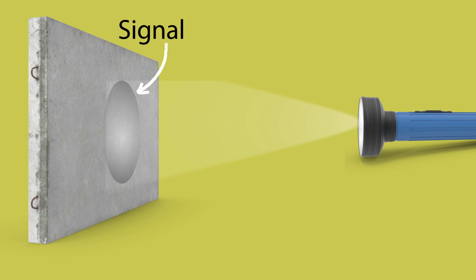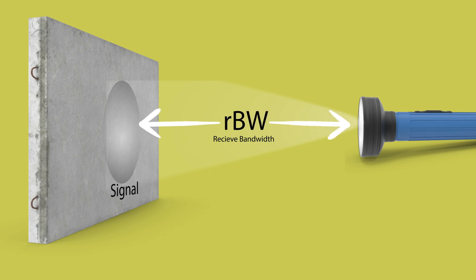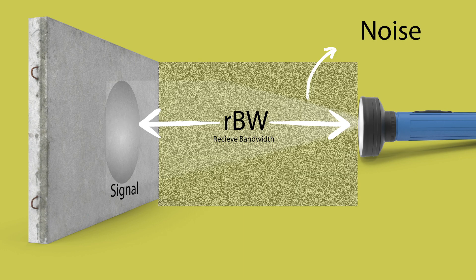Think about it like this. Signal is a light that is coming out of this flashlight. Our received bandwidth is the distance between the flashlight and where the light meets the wall.